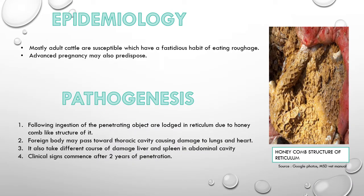Most adult cattle are susceptible, particularly those with a fastidious habit of eating roughage. Advanced pregnancy may also predispose an animal to this disease. Coming on to the pathogenesis: following ingestion of the penetrating object, it is lodged in the reticulum due to the honeycomb-like structure. The foreign body may then pass toward the thoracic cavity, causing damage to the lungs and heart, or take a different course to damage the liver and spleen in the abdominal cavity. Clinical signs may commence sometimes even after 2 years of penetration.